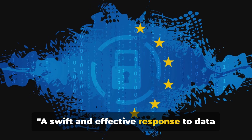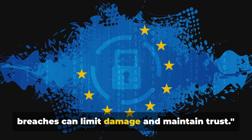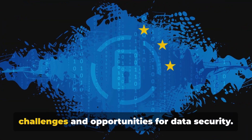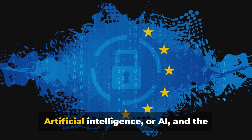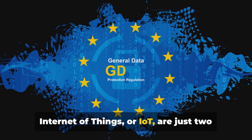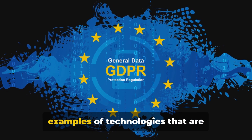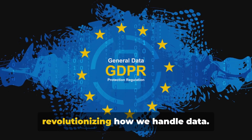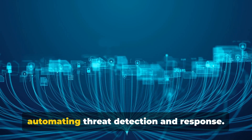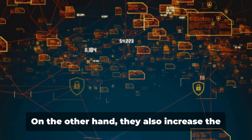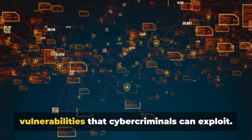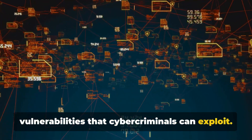A swift and effective response to data breaches can limit damage and maintain trust. Emerging technologies pose new challenges and opportunities for data security. Artificial intelligence, or AI, and the Internet of Things, or IoT, are just two examples of technologies that are revolutionizing how we handle data. On one hand, they can enhance security by automating threat detection and response. On the other hand, they also increase the attack surface, creating new vulnerabilities that cyber criminals can exploit.